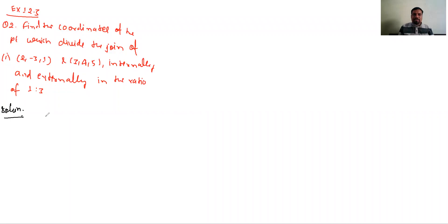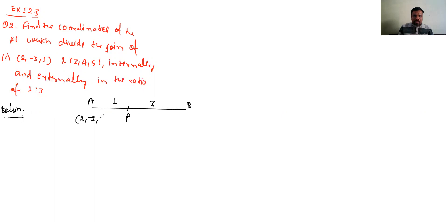So internal division and external division formula will be applied. A and B: P divides in 1:3 ratio. A ka coordinate (2,-3,1), B ka coordinate (3,4,5), P ka coordinate (X,Y,Z).